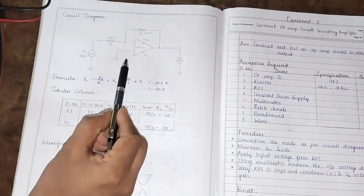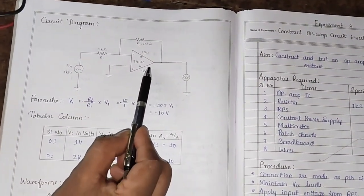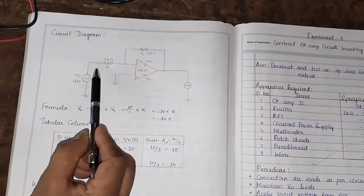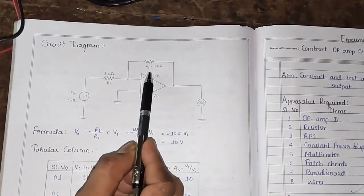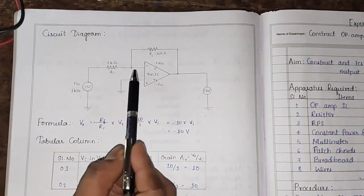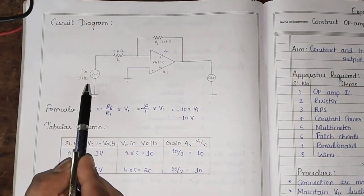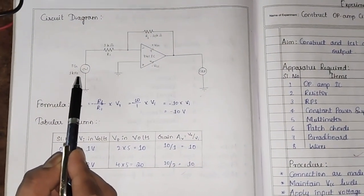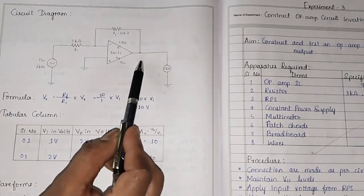In this circuit, it consists of an op amp IC that is 741 and resistor R1 is connected to pin number 2 and feedback resistor is connected between pin number 2 and pin number 6. Once we apply the input voltage, then the amplified output voltage is obtained at pin number 6.